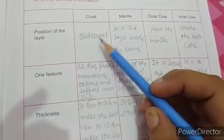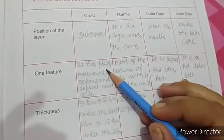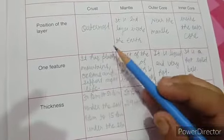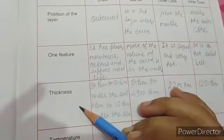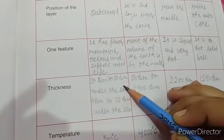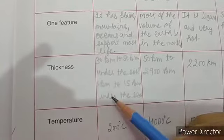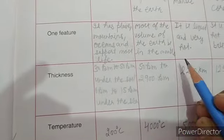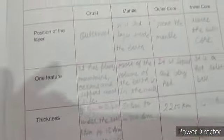Where is the position of the layer crust? Outermost. What is one feature? It has plain, mountain, oceans and spot most life. What is the crust? Life exists. Thickness is 30 km to 50 km under the soil, 6 km to 15 km under the sea. Temperature 200 degree Celsius.